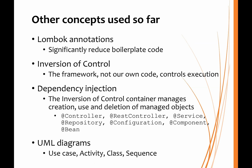We've also looked at using Lombok annotations, which again significantly reduce boilerplate code. We've looked at inversion of control, which means that instead of our own code through the main method controlling execution of everything, it is the framework that does the controlling, and we write components that plug into that framework. We've looked at dependency injection, and we've seen that in Spring Boot there's an inversion of control container that manages the creation, use, and deletion of the objects that it manages. And we've also looked at UML diagrams — specifically the use case diagram, activity diagrams, the class diagram, and sequence diagrams.